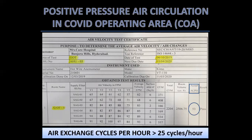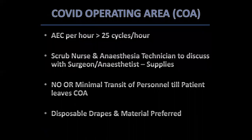We checked our COVID operating area and found the air exchange cycle was as high as 53 cycles per hour — almost one cycle per minute — so that is satisfactory. The scrub nurse and anesthesia technician must discuss with the surgeon and anesthetist before the patient arrives, ensuring all supplies are present in the theater to minimize transit of personnel. Disposable drapes and materials are preferred.